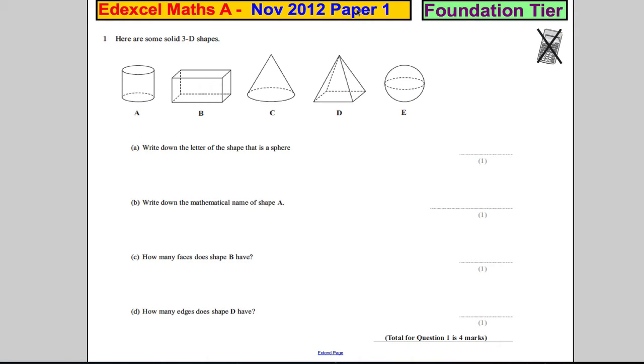Question 1. We have some solid 3D shapes. Write down the letter of the shape that is a sphere. Well, you can look at that. A sphere is like a football. A sphere is clearly E.